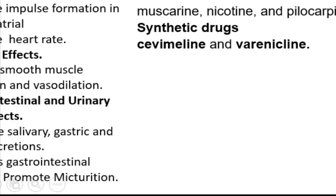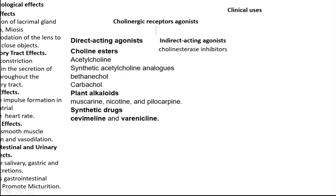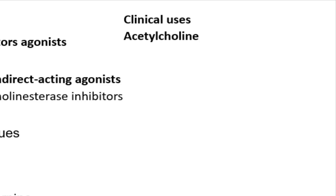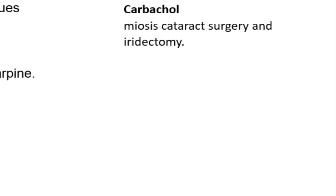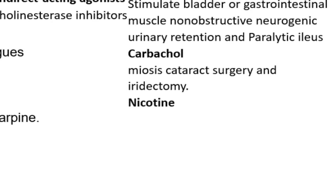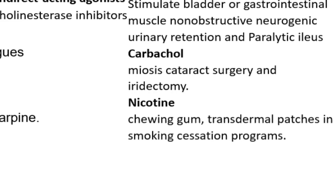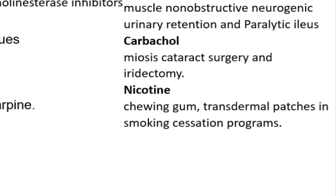Acetylcholine has limited clinical applications. An ophthalmic solution of acetylcholine is available for intraocular use during cataract surgery to produce miosis after extraction of the lens. Bethanecol selectively activates muscarinic receptors and has been used to stimulate bladder or gastrointestinal muscle without significantly affecting heart rate or blood pressure. It can be given postoperatively or postpartum to increase bladder muscle tone in patients with non-obstructive neurogenic urinary retention. Carbachol solution is instilled intraocularly to produce miosis during ophthalmic surgery such as cataract surgery and iridectomy. Nicotine is available in chewing gum, transdermal patches, and other products designed for use in smoking cessation programs.